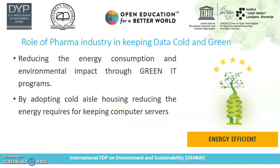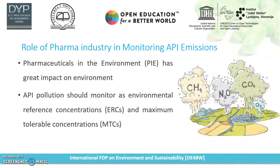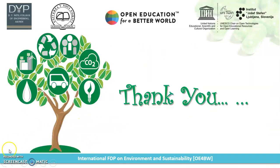The role of pharmaceutical industry in monitoring API emissions was already discussed in the previous YouTube video. APIs are very small molecules that enter the sewage system and reach drinking water, where they are not filterable. People have been drinking this water, which is also given to plants and animals, causing API pollution. Therefore, there is a pharmaceutical industry requirement to take control over API pollution. It should be monitored and maintained at environmental reference concentration, and must not exceed the maximum tolerance concentration. Thank you very much for watching this video.